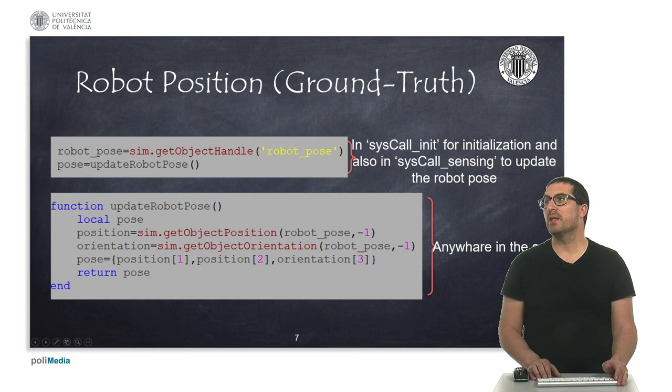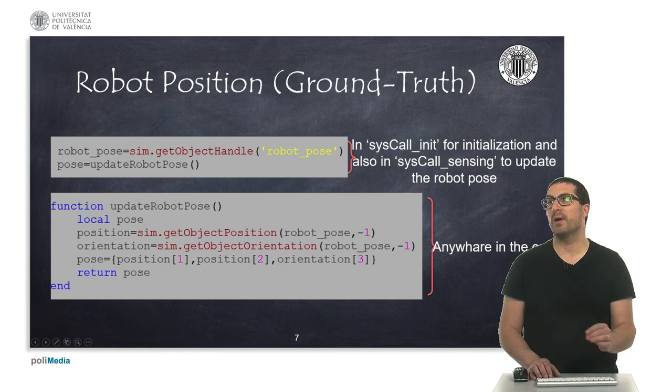So, indeed, I put here also a function to how to get access to that pose. And it's rather quite simple. We have to get access to the object position and orientation of this dummy. And this function returns one single argument, but with three numbers, which correspond to the x, y and orientation of the robot.